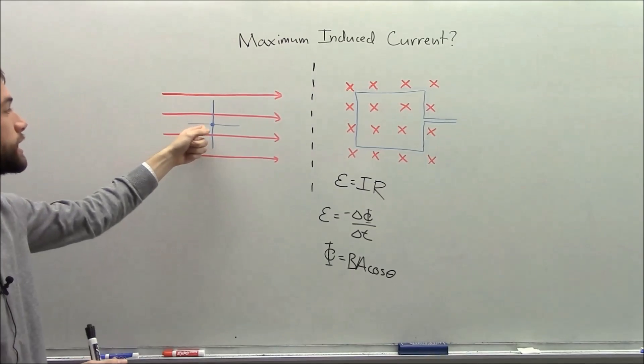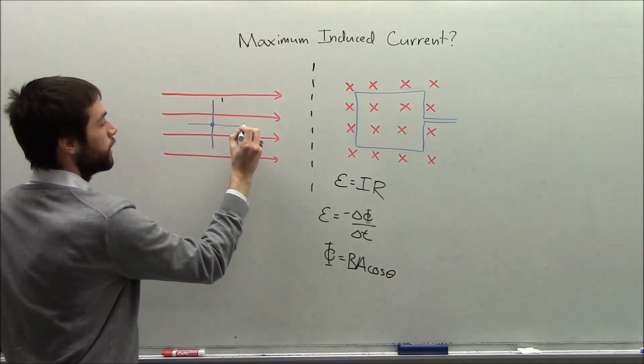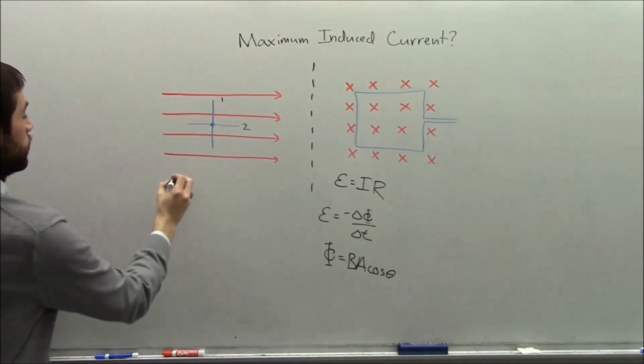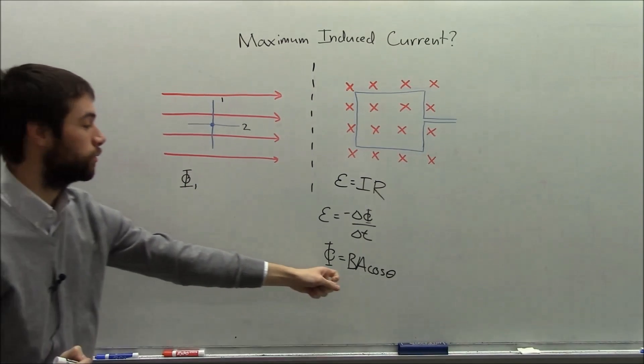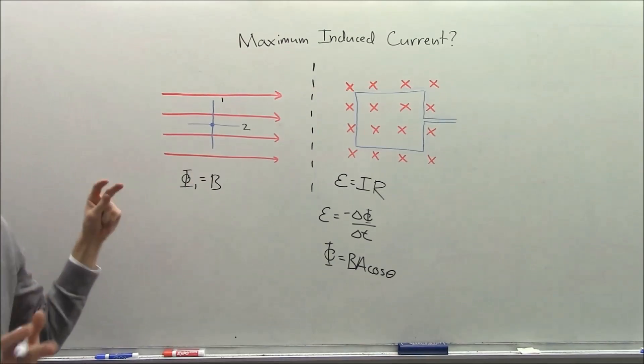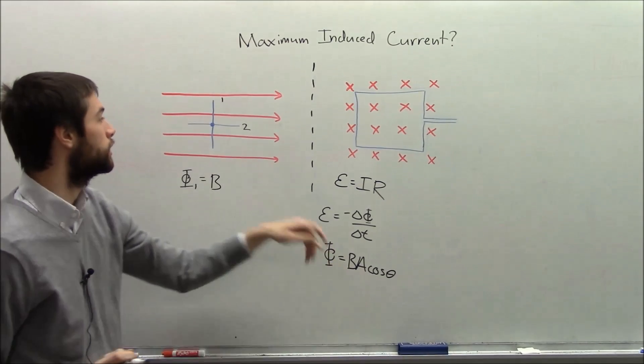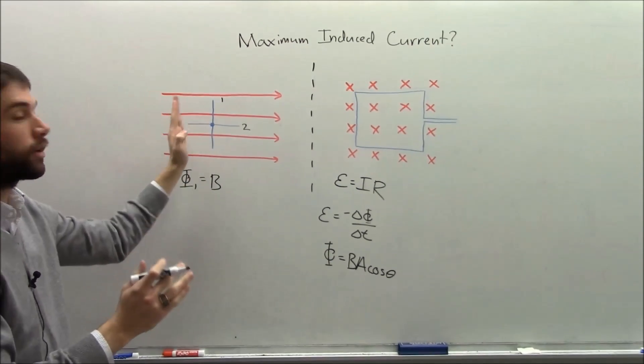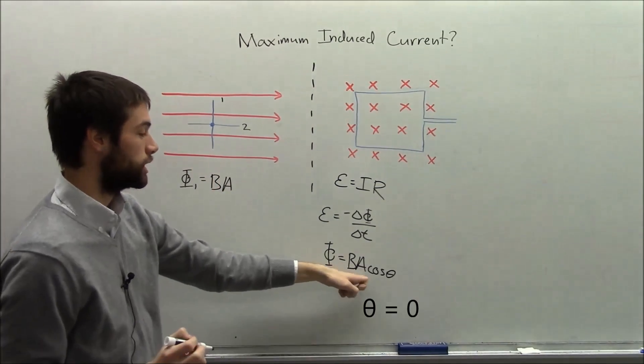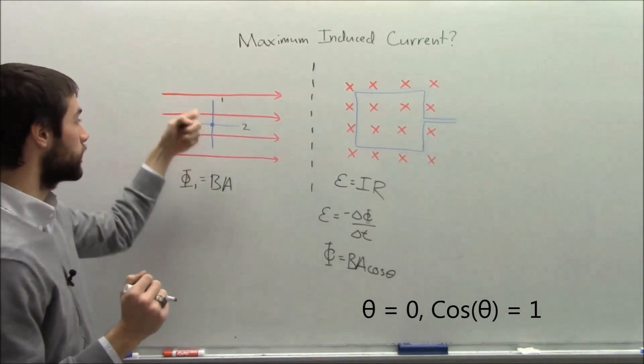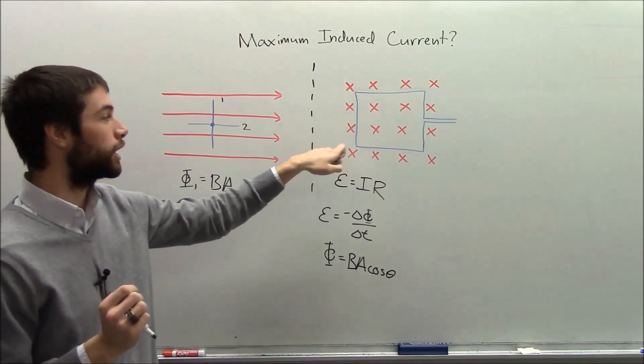So let's ask ourselves what the flux is at these two points. Let's call this orientation one and this orientation two. The flux in position one, well we have our B, some number, but it's not going to change—the B is a constant. We have our area, and in this orientation we have the full area. There's no angle, so it's just A, and the cos θ is one. So our flux in orientation one is just the magnetic field B times the area of our loop.